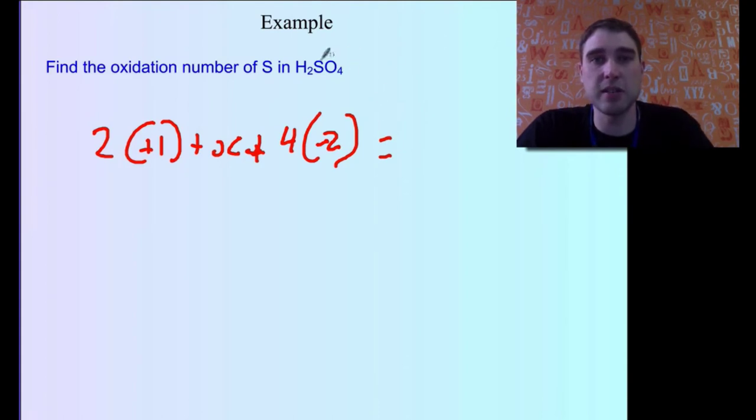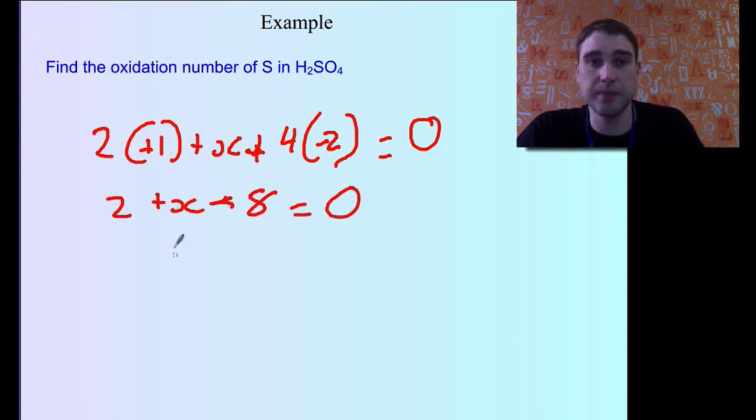That has to equal the charge on the complete thing. And we can see there's no charge up here. So in this case that has to equal 0. And then we just solve for X. So 2 plus X minus 8 equals 0. So 2 minus 8 is minus 6.